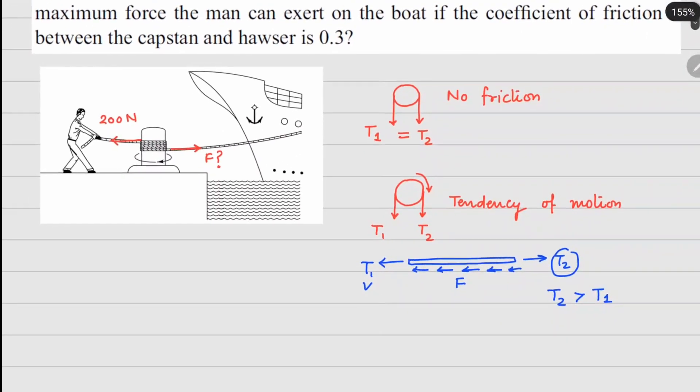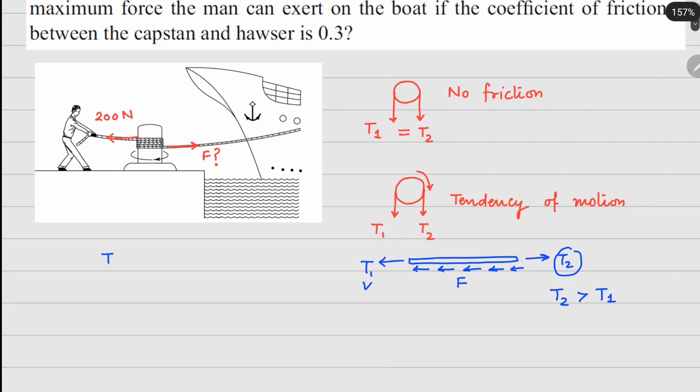And what is the mathematical relationship between T1 and T2? Since T2 is more, T2 divided by T1 will always equal e to the power f theta, where f is your coefficient of friction and theta is the angle for which this rope is wrapped. So in this case, this angle right here is 180 degrees, so theta is going to be pi.